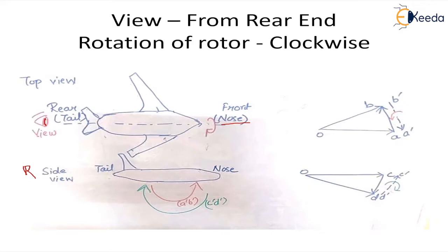The first case we are taking: the viewer is at the rear end and the propeller is rotating clockwise. Now I have to make a vector diagram. The spin axis of the rotor is this axis. I know the angular velocity omega. So we make the vector OA, which is parallel to this axis of spin, and we already know the magnitude omega.